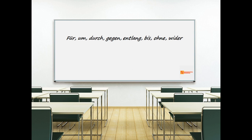Now let's talk about accusative prepositions. These eight prepositions require any noun or pronoun that follows them to be in the accusative case: für, um, durch, gegen, entlang, bis, ohne, wider. To memorize these eight prepositions, there is a small acronym called 'FUDGE BOW' — or you can create your own. F stands for 'für', U for 'um', D for 'durch', and so on. This word is created using the initials of these eight prepositions.